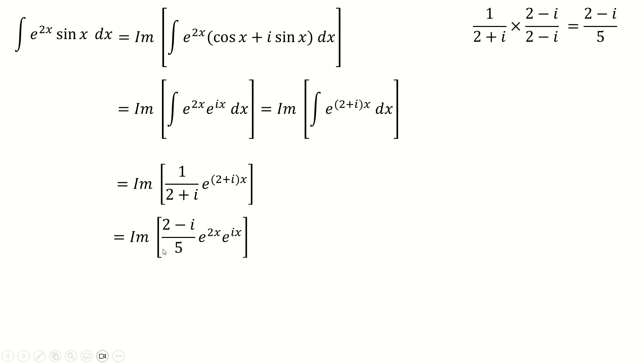Of course, I can take out a fifth here and take out e to the 2x. And I'll put 2 minus i in brackets. And then I'll rewrite e to the ix, just doing every step backwards, essentially, now that we've integrated.